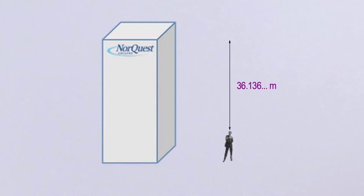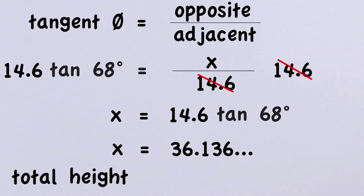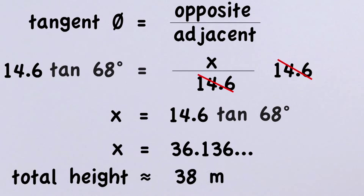In order to calculate the total height of the Norquest building, we need to add the height of the clinometer, which is 1.65 meters. Therefore, the total height of the building is approximately 38 meters.